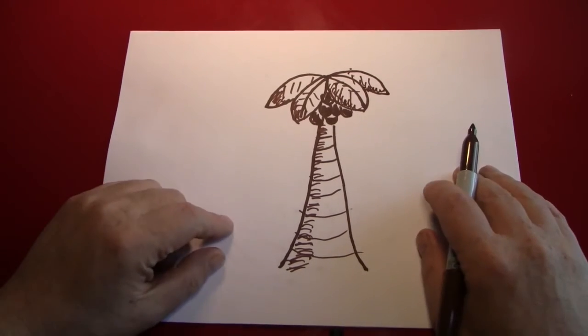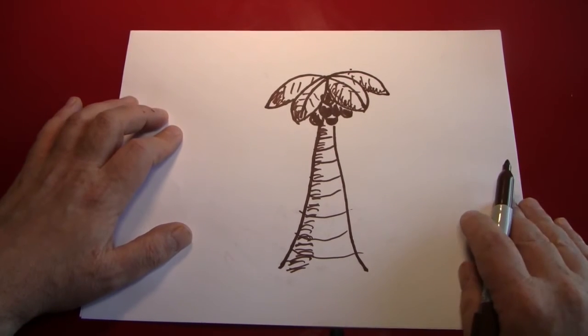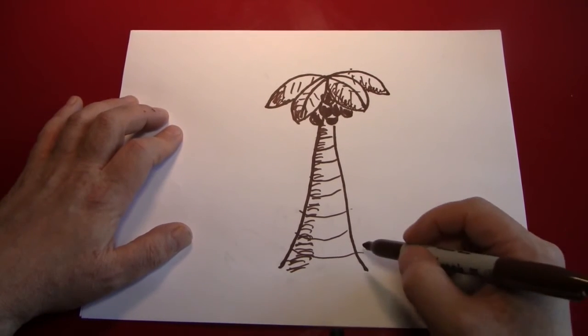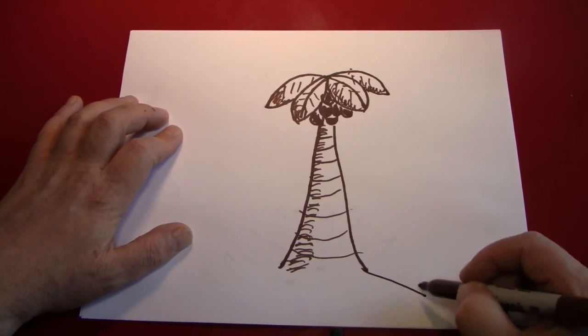All it needs is a place to be. And most trees I draw I make a little grass pattern at the bottom, but this is a palm tree. So what I'm going to do is I'm going to make it be on a tiny desert island.